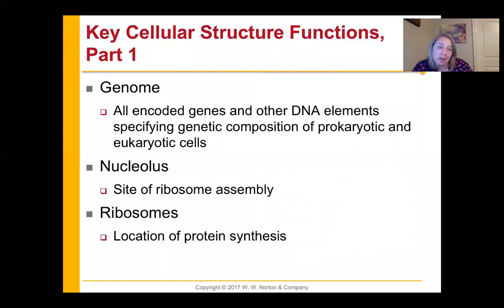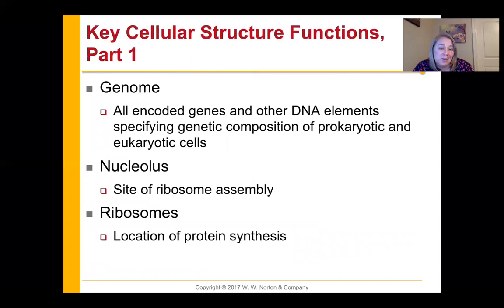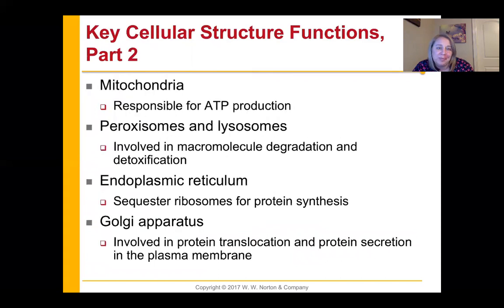All of the DNA inside of a cell is referred to as the genome — it has all the genes encoded, plus other elements that help the cell know when to transcribe, what to transcribe, and how often. This is our genetic composition, both eukaryotic and prokaryotic. Inside the nucleus of eukaryotes, we have the nucleolus — the site of ribosome assembly. Once assembled, ribosomes are the location of protein synthesis. Mitochondria are responsible for energy and ATP production. Peroxisomes and lysosomes are involved in degradation, detoxification, and getting rid of unwanted materials.